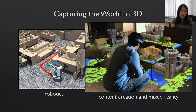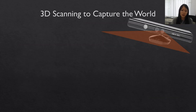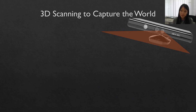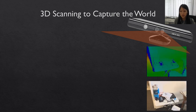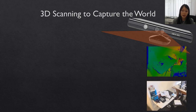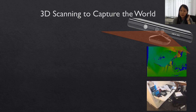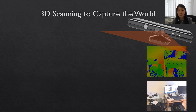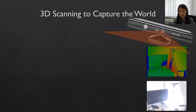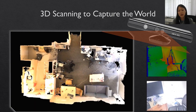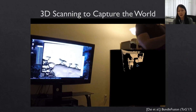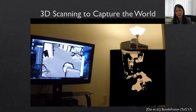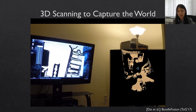Why RGBD scans? They're a pretty promising way to actually estimate geometric observations of real world environments. We have sensors like the Microsoft Kinect which allows us to capture both color and depth frames. Here we have an example color video sequence and depth video sequence being captured in real time, and if we can estimate where all of these frames were taken we can merge them all together into a unified 3D model for the scene being observed.